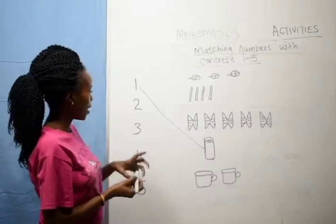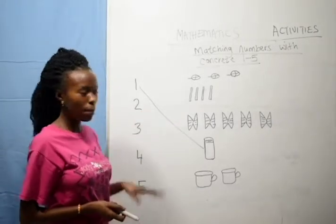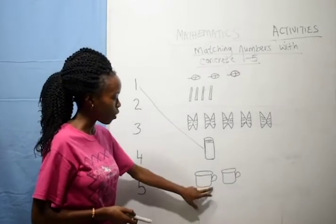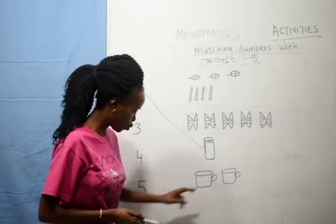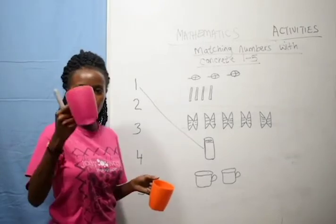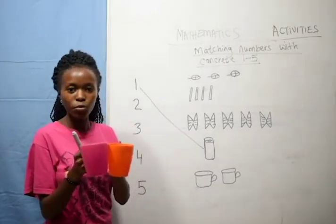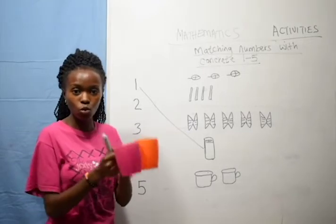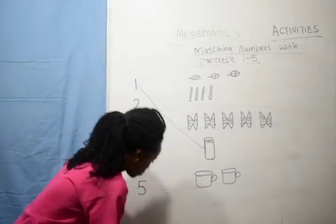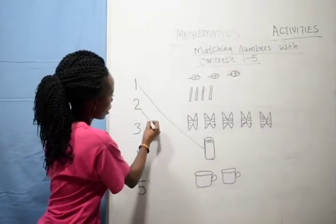We have number 2 — 2 cups. Number 2 is 2 cups. And here are the cups, we have 1, 2. I have 2 cups here. So number 2 is equal to 2 cups. Very good. So we match.